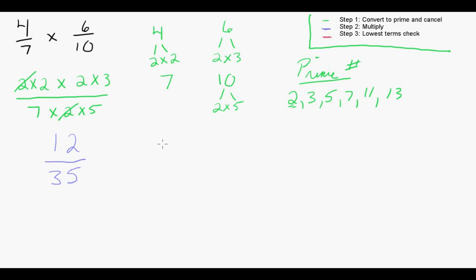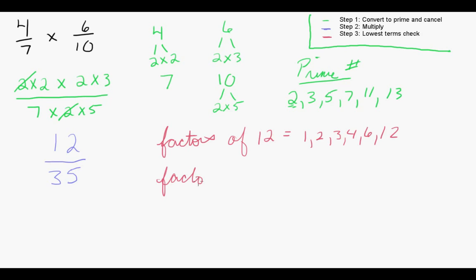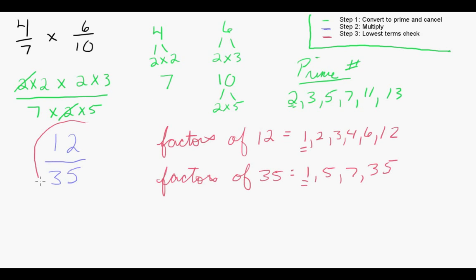Moving on to step 3, we're going to take the factors of 12: 1, 2, 3, 4, 6, 12. And the factors of 35 are 1, 5, 7, and 35 itself. The only thing common in these lists is 1. Dividing by 1 is not going to change our final fraction. So we can say that 12 over 35 is in lowest terms.